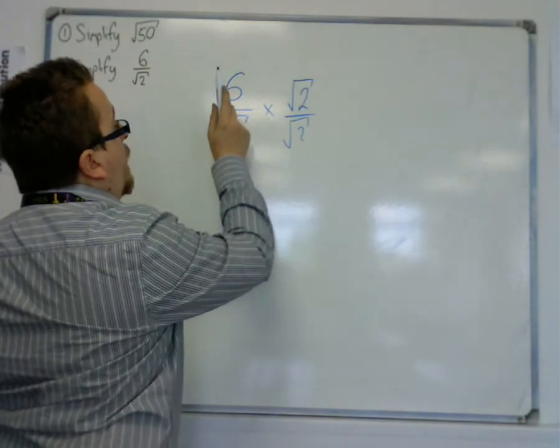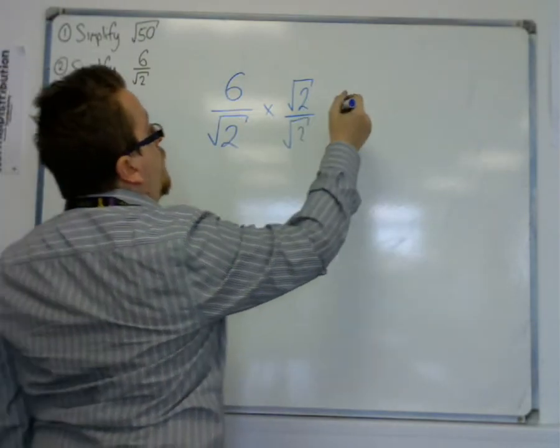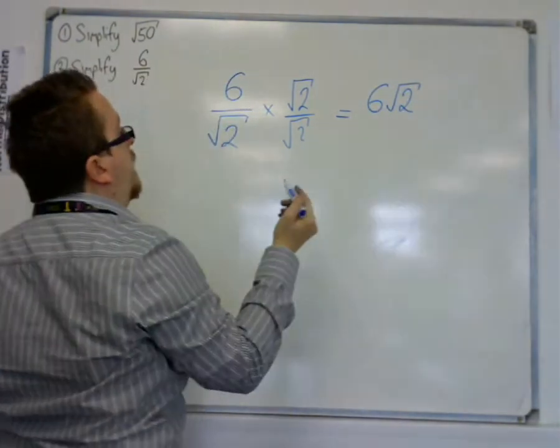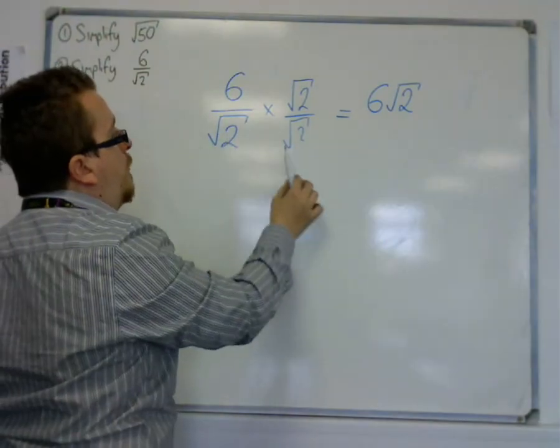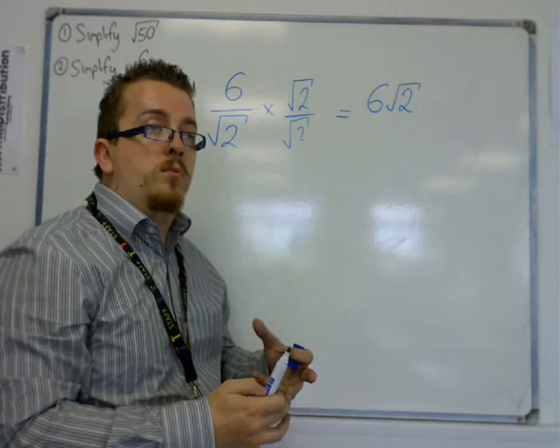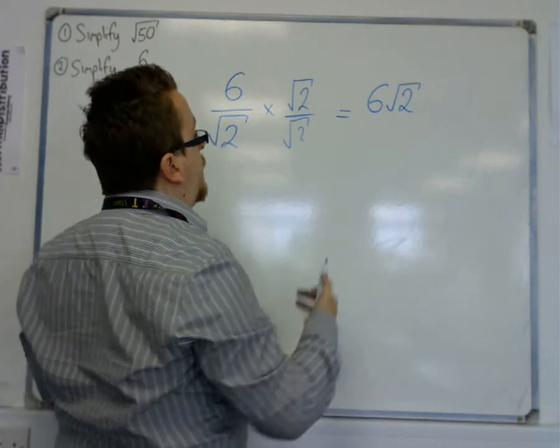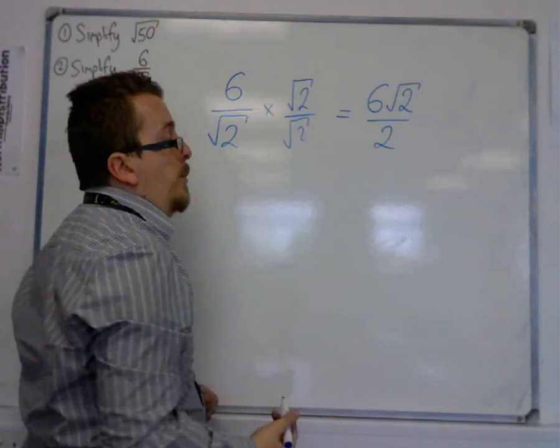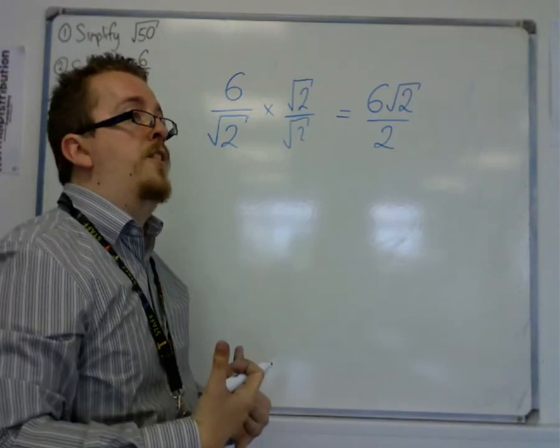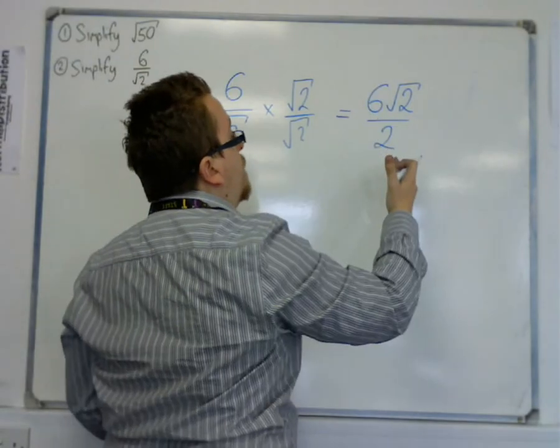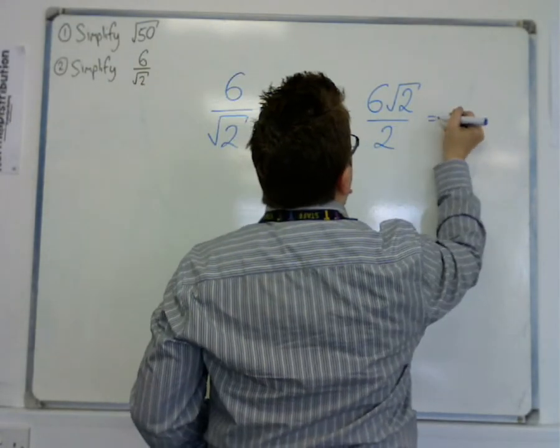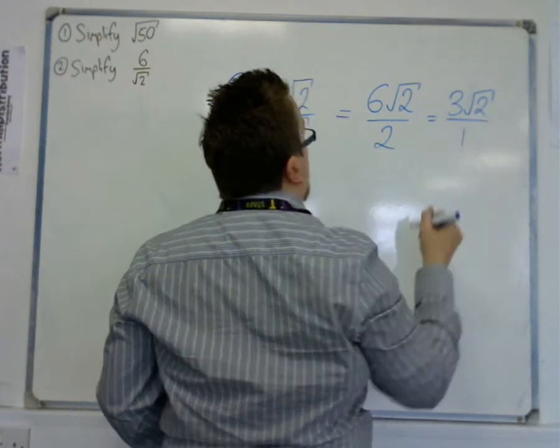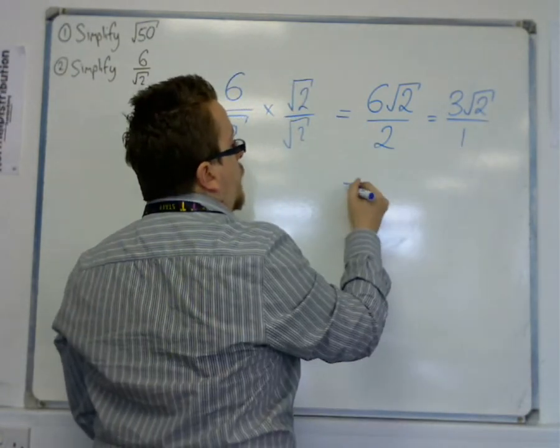So if I have 6 times root 2, I get 6 root 2. So remember multiplying fractions here. And then I get root 2 times root 2. Well, root 2 squared is just 2. So I've now got 6 root 2 over 2. And that can be simplified, because you can divide top and bottom by 2. So we get 3 root 2 over 1. And if you divide by 1, it's just 3 root 2.